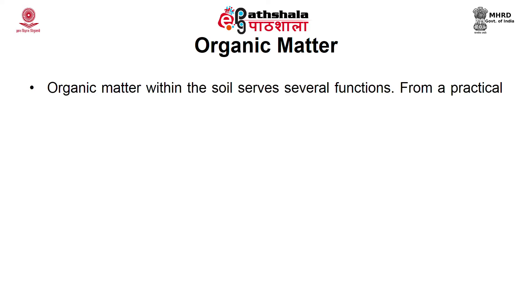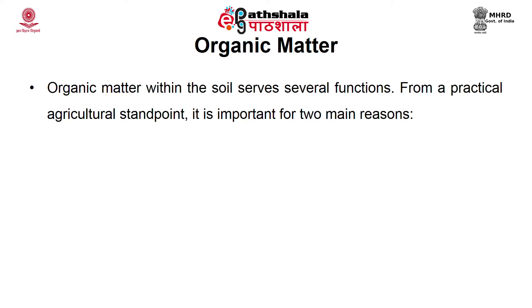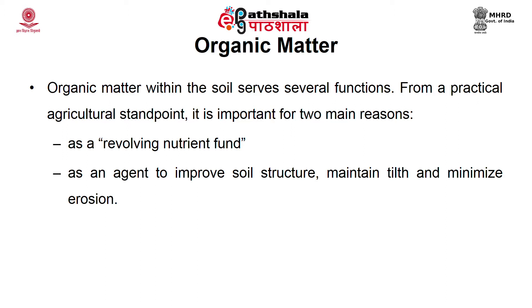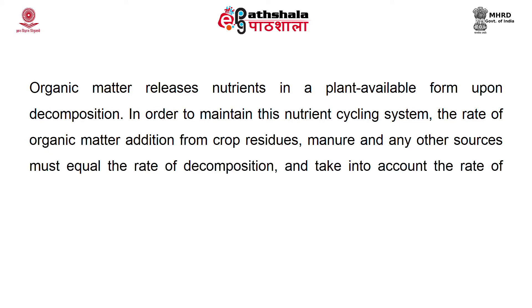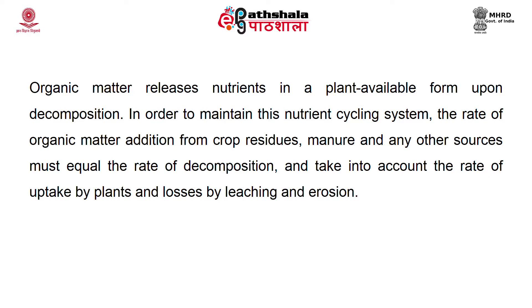Organic matter within the soil serves several functions. From a practical agriculture standpoint, it is important for two reasons. As a revolving nutrient fund, organic matter serves as a storehouse of plant nutrients, since it is derived mainly from plant residues containing all essential plant nutrients. The stable organic fractions adsorb and hold nutrients in plant-available form. Organic matter releases nutrients in a plant-available form depending upon the decomposition process. The rate of organic matter addition from crop residues, manure, and other sources must equal the rate of decomposition, accounting for nutrient uptake by plants and losses by leaching and erosion.